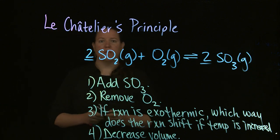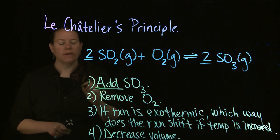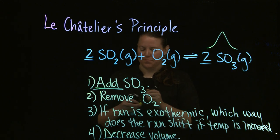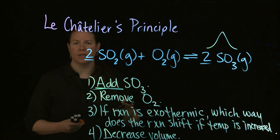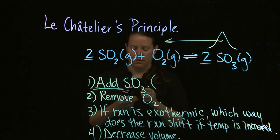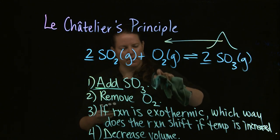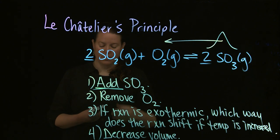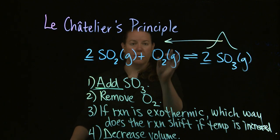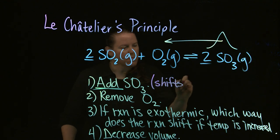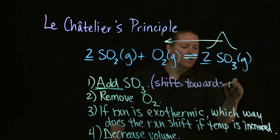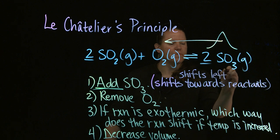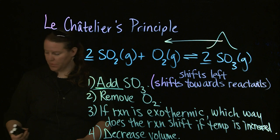If we add SO₃: ask yourself, am I creating a hill or a hole? Adding creates a hill, and SO₃ is a product, so I'm creating a hill on the product side. The reaction shifts to the opposite side to flatten out that hill — it shifts towards reactants, or shifts left.